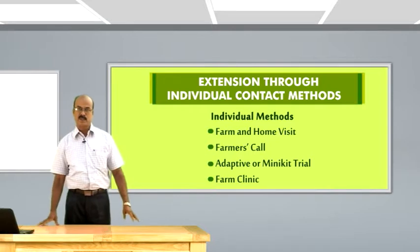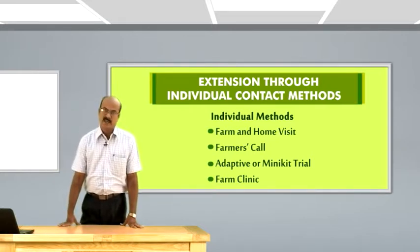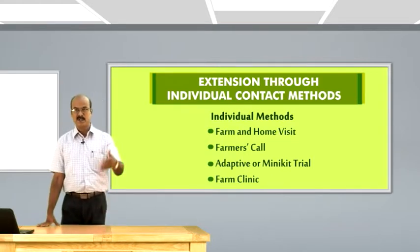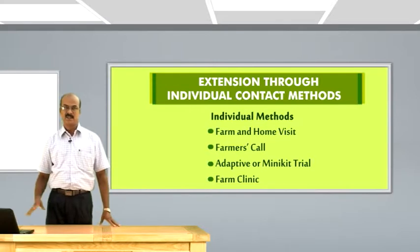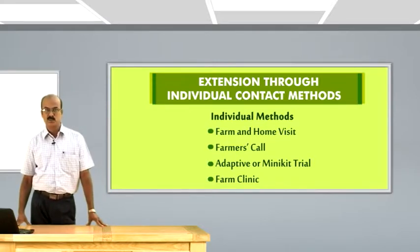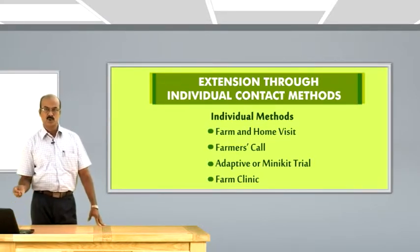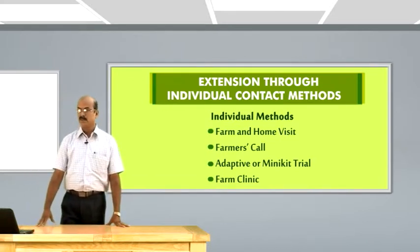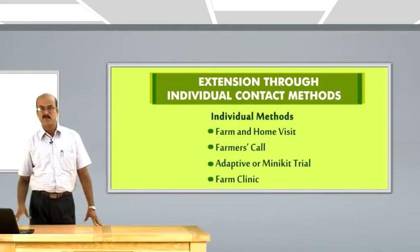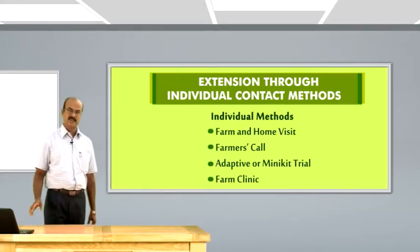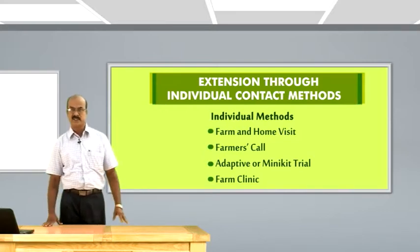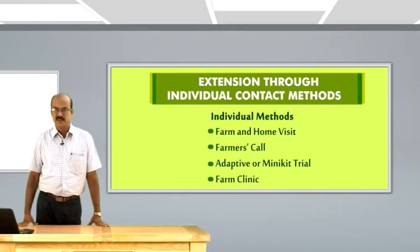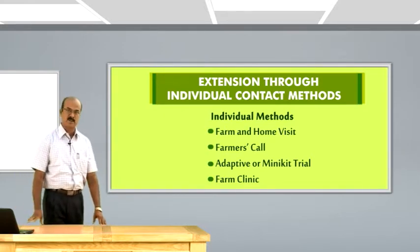Another method is the adaptive or mini kit trial. The adaptive trial indicates the adaptability of extension methods or technologies at the field itself, whether it is suitable or should be modified. To encourage the learners or customers, a mini kit trial provides a sample of seeds — for example, a seed sample of 1 kg is given to the farmers to make use of it in their field situation, which is why it falls under individual contact.